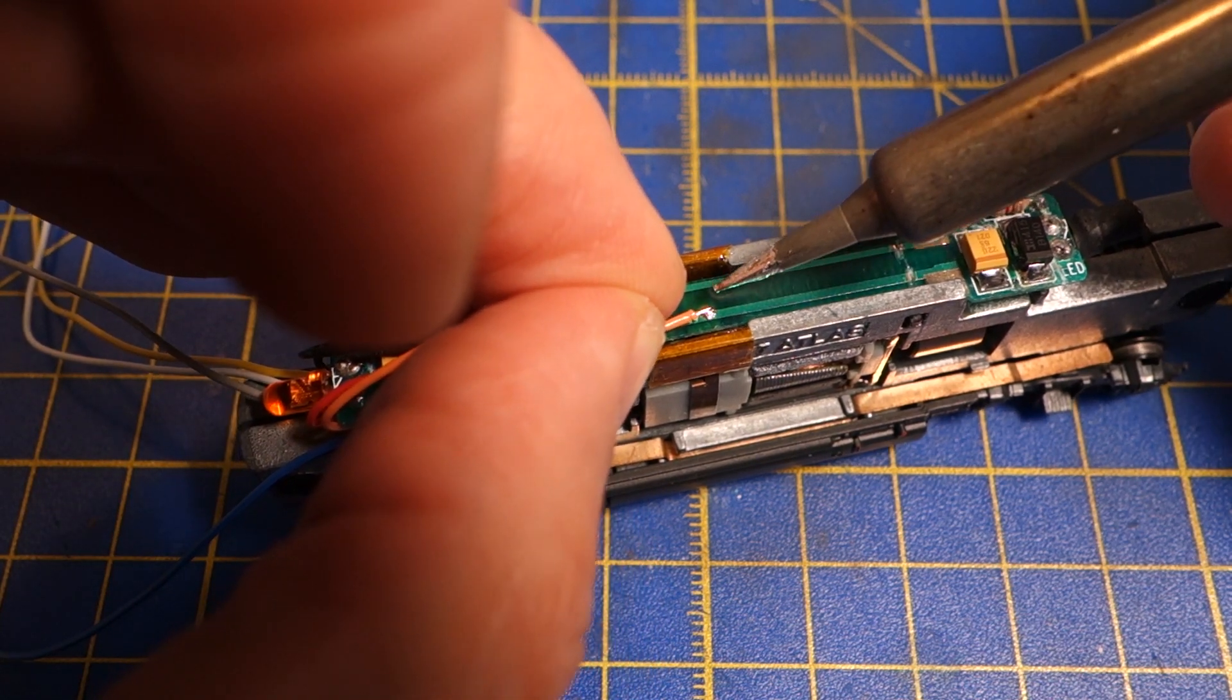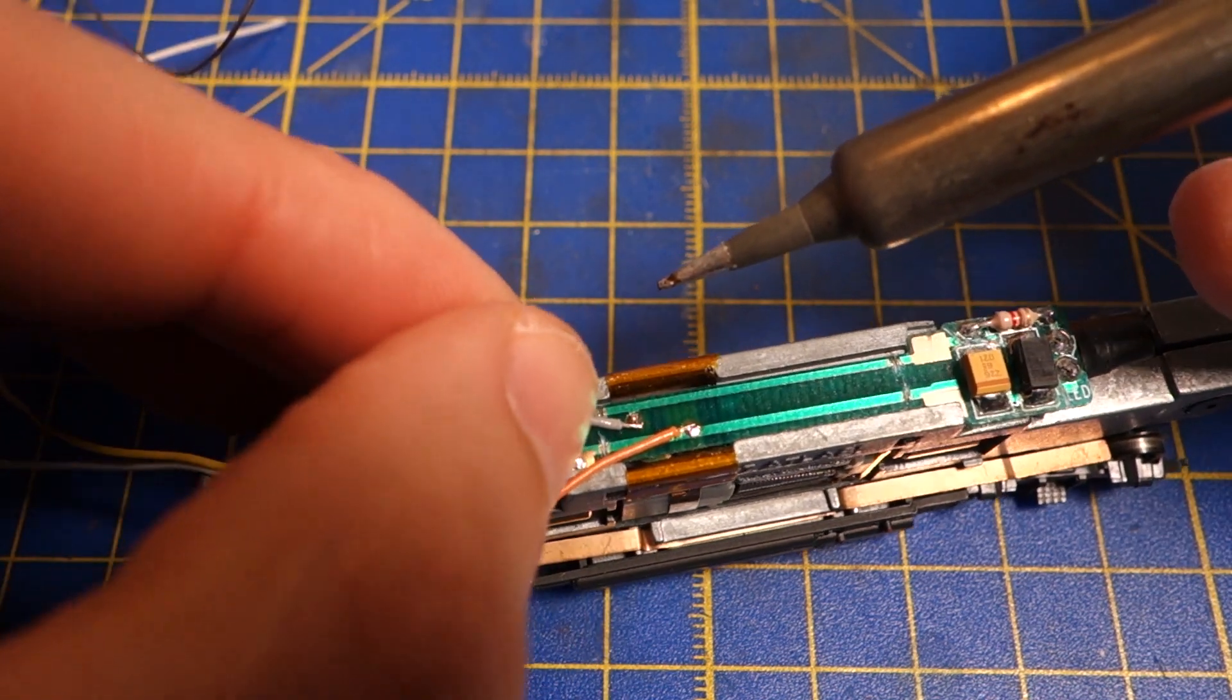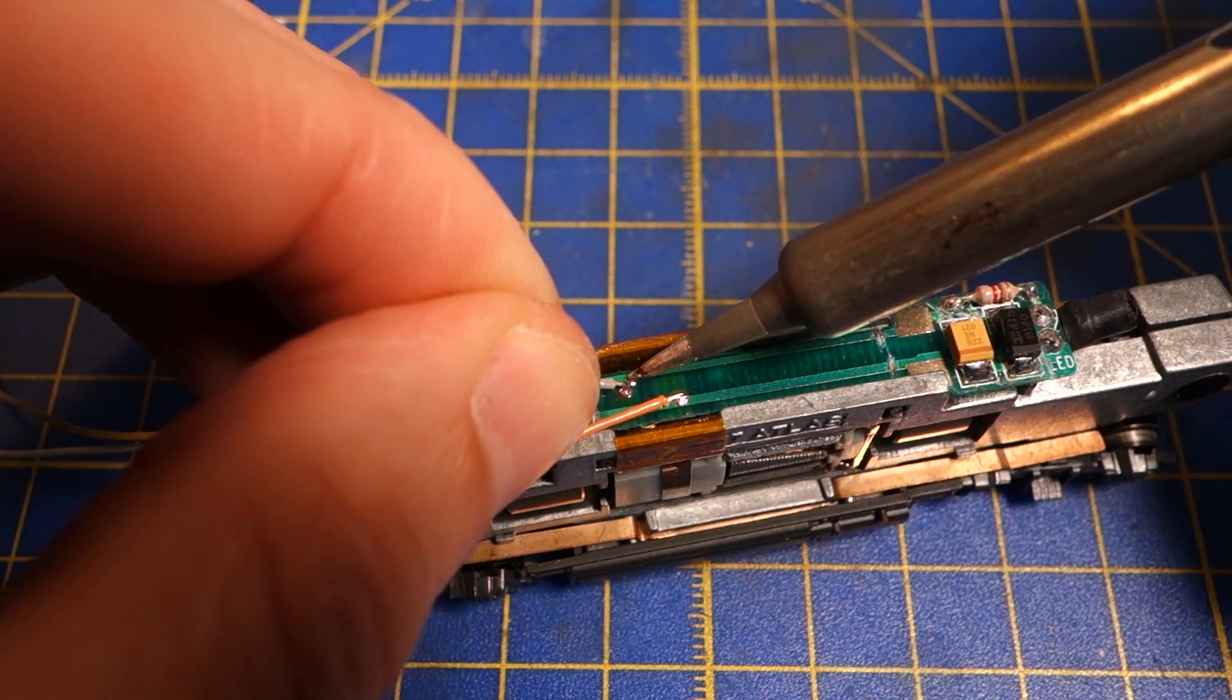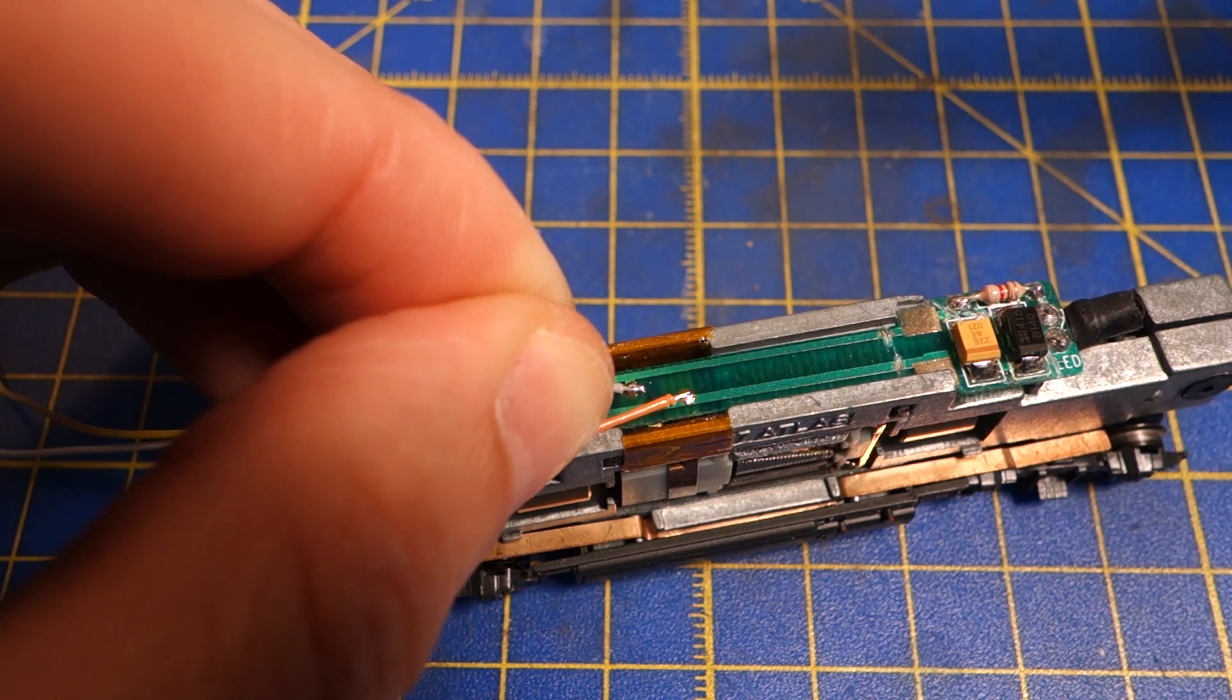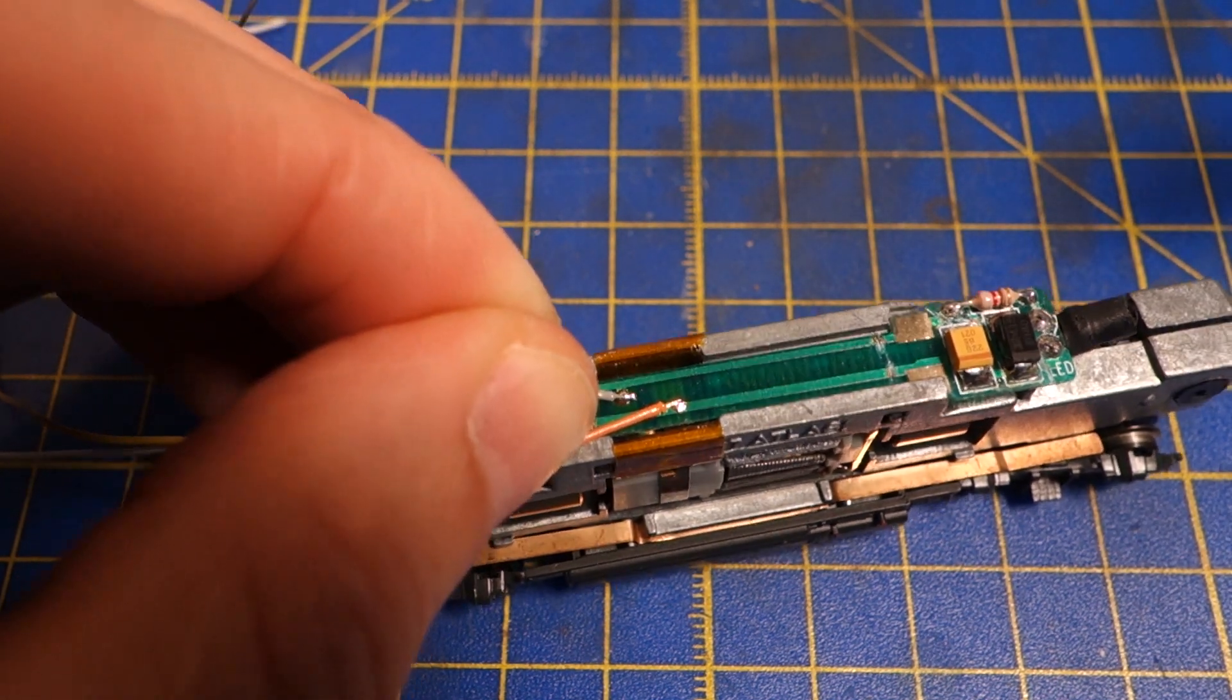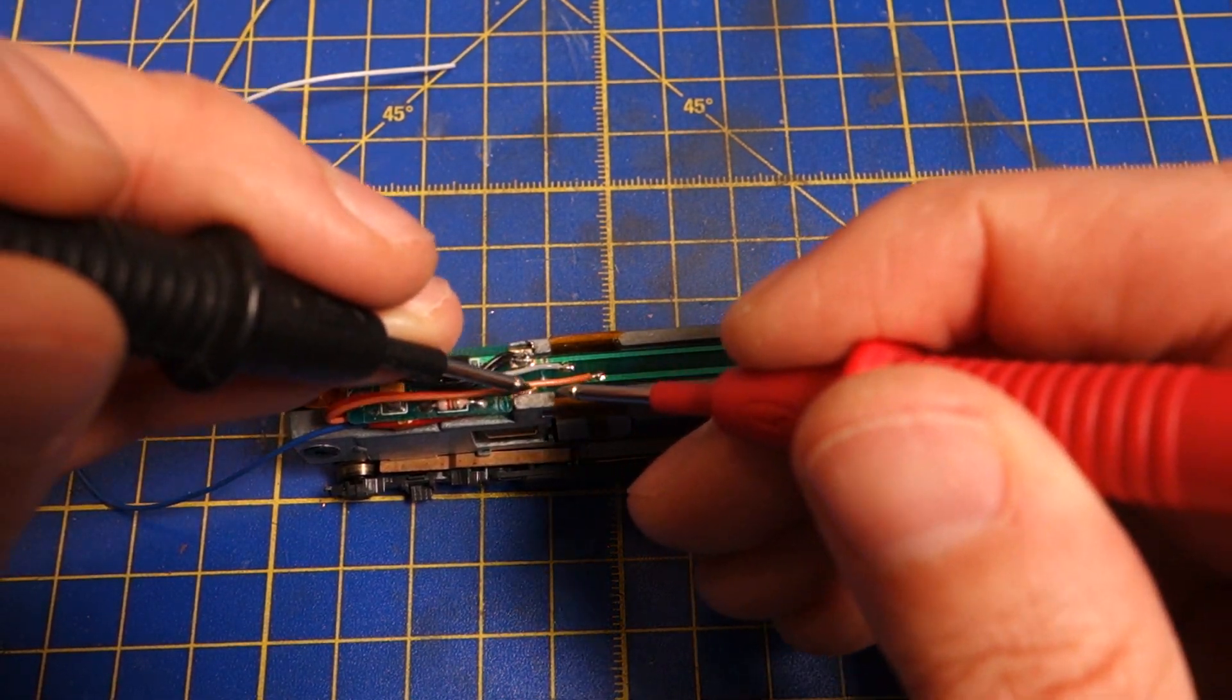So orange as pale red goes to the right motor contact, and gray as pale black goes to the left motor contact. I bring out the DMM again to make sure that there are no unwanted electrical connections.